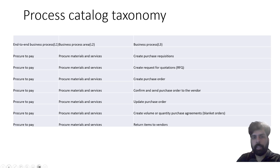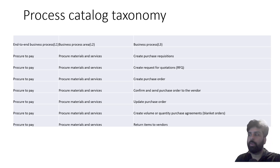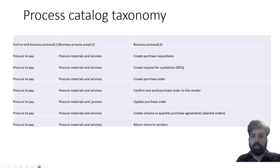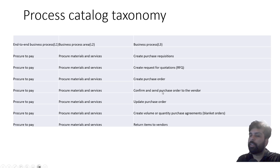Now, procure-to-pay is broken down into your process taxonomy. As I said, it can be of three levels — this is an example taken from a standard Microsoft catalog. The first level defines procure-to-pay. Below that you can have order-to-cash, record-to-report, acquire-to-dispose, and all your processes. Procure-to-pay is further broken down into level 2, which is procuring material and services, recording vendor invoices, processing vendor payments. Level 2 is further broken down into level 3: creation of purchase requisition, RFQ, purchase orders — sending and updating. So all these are your level 3 processes.